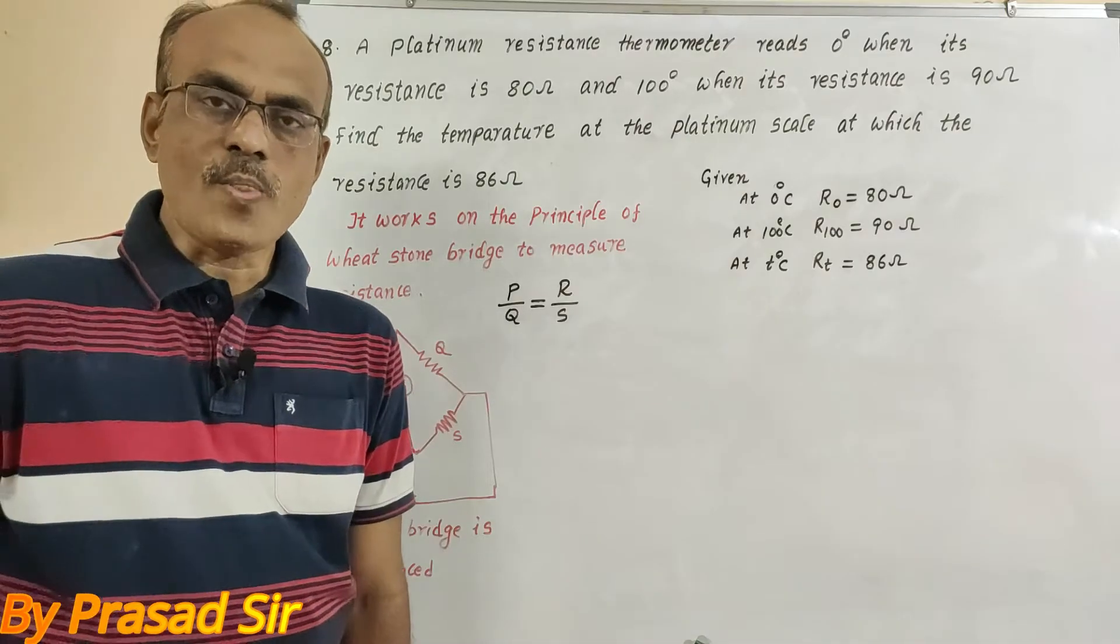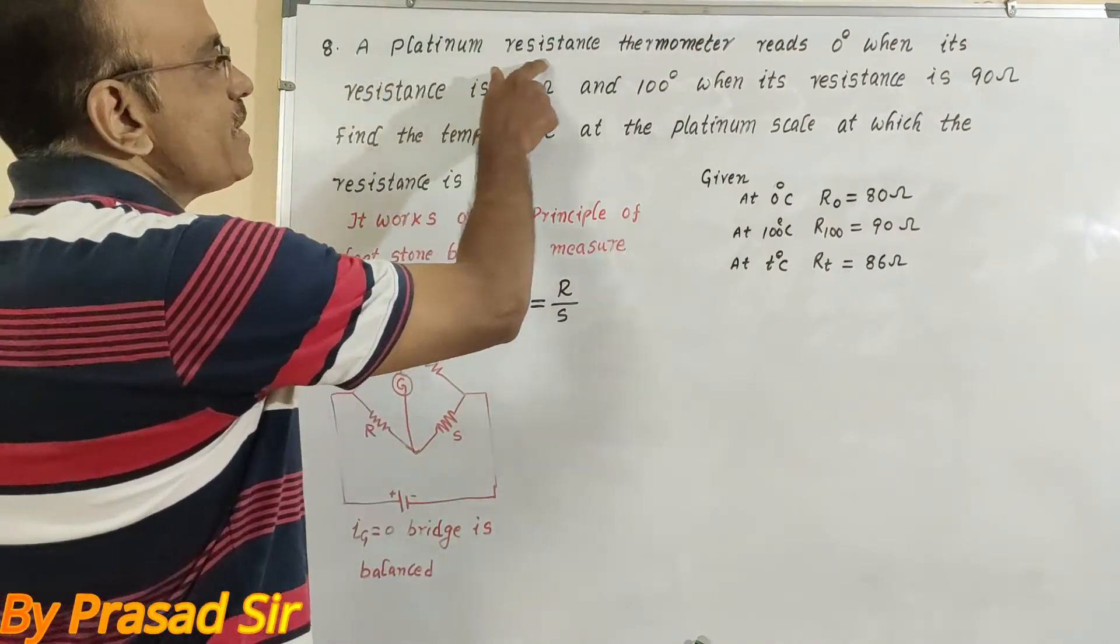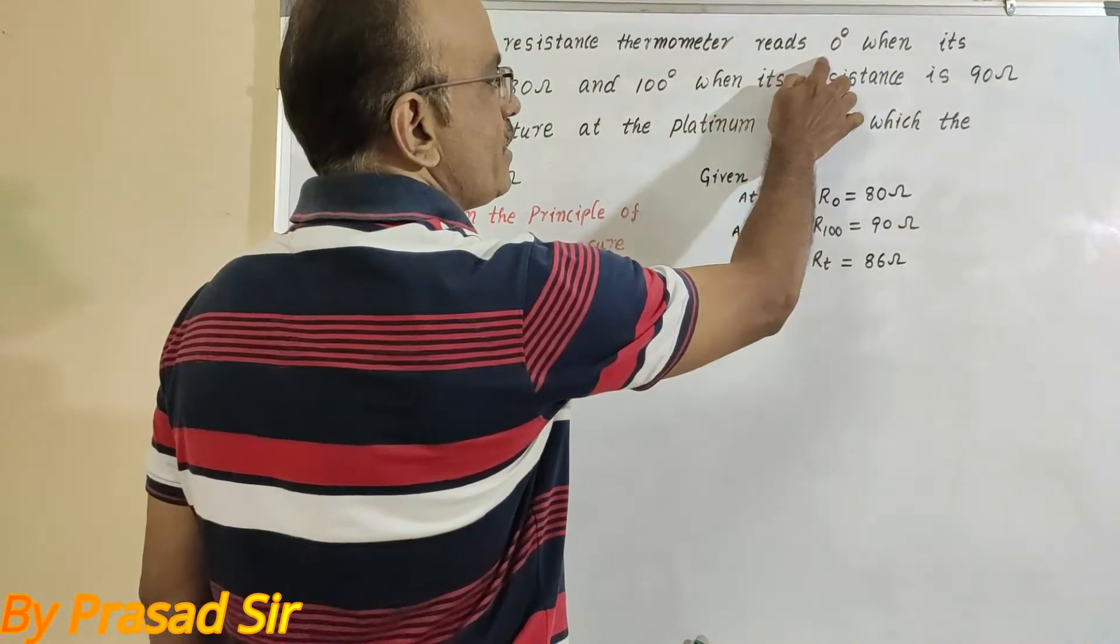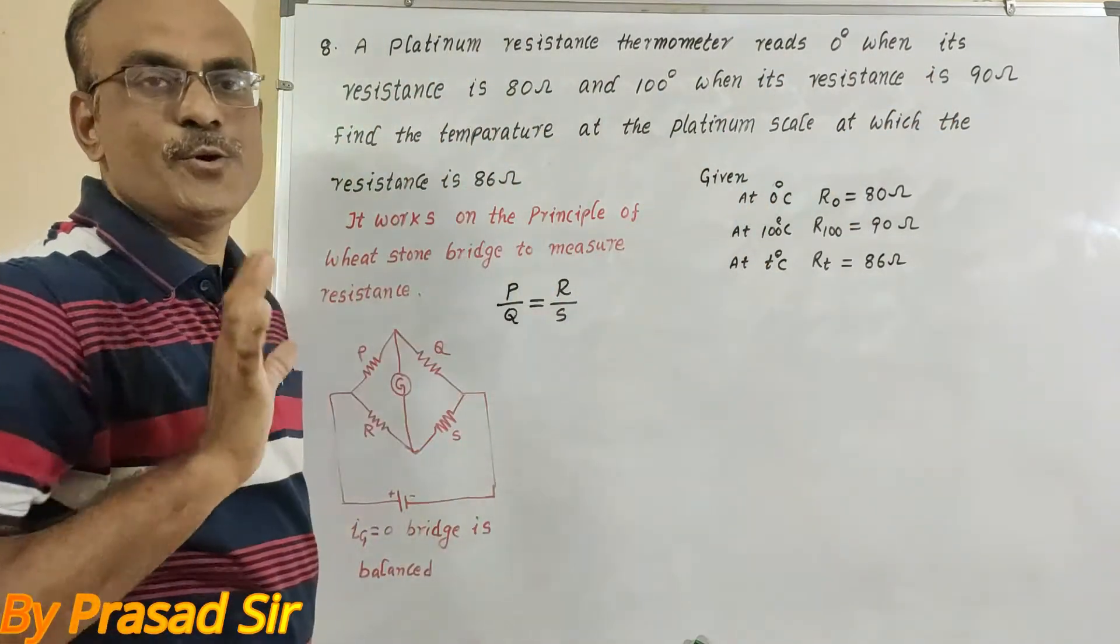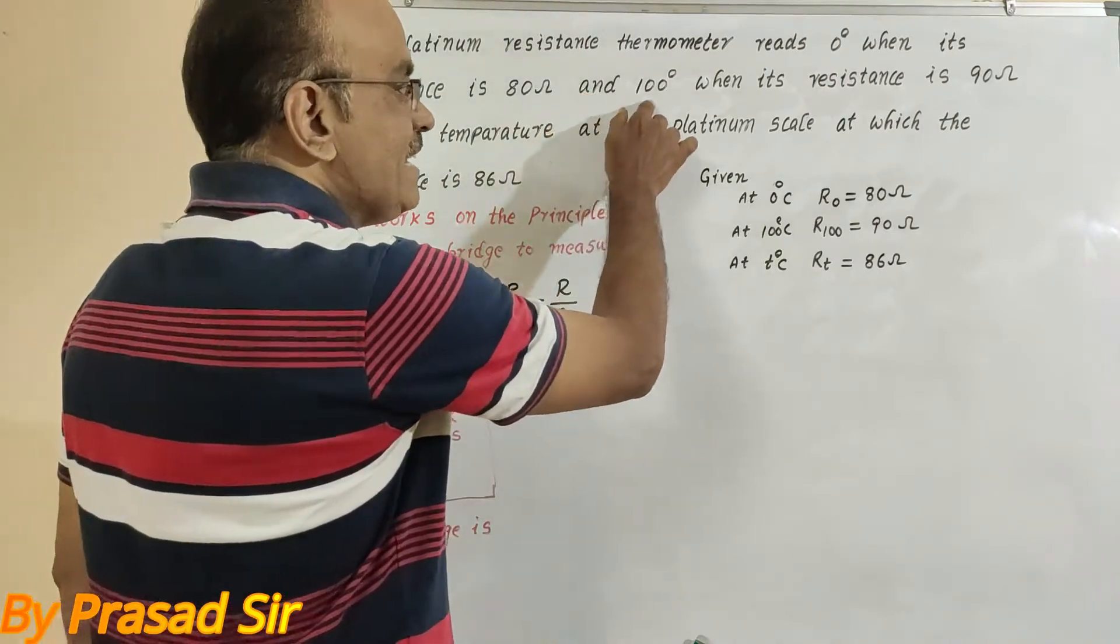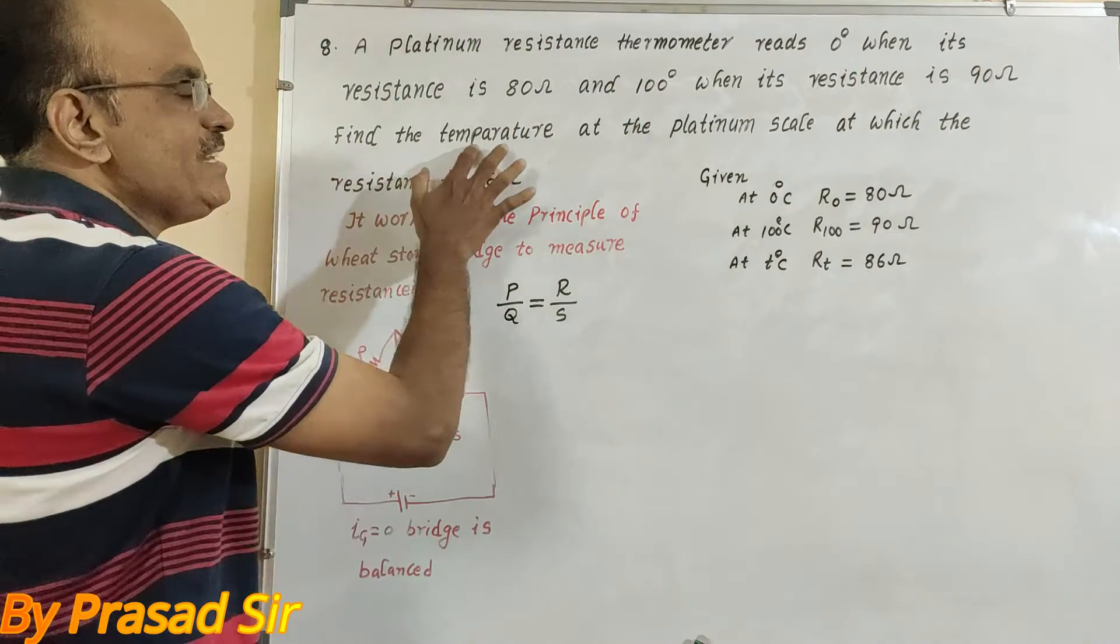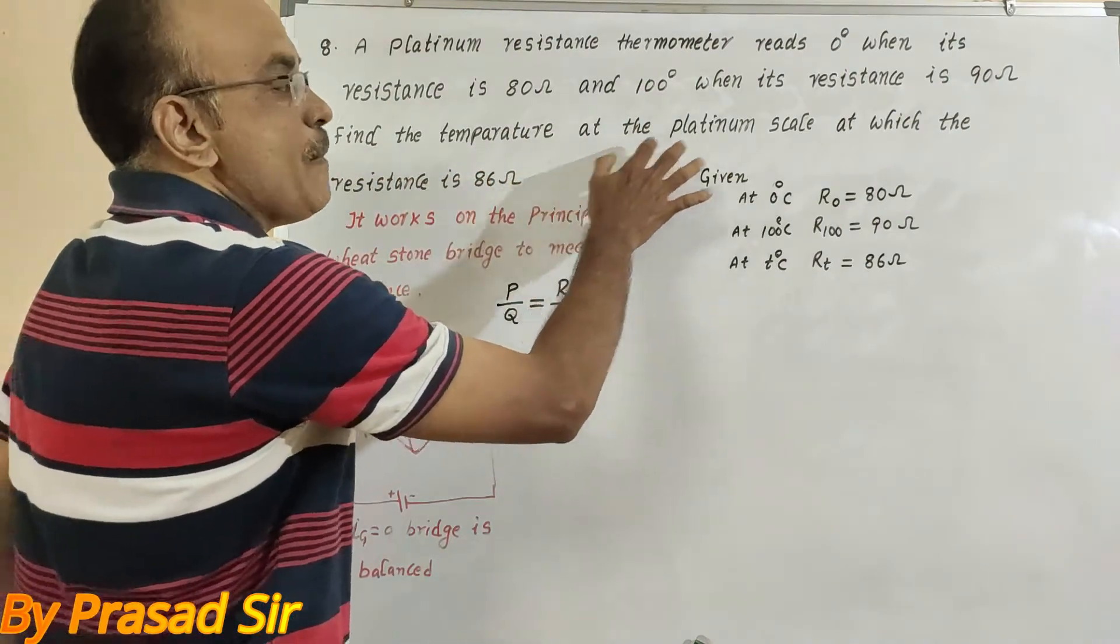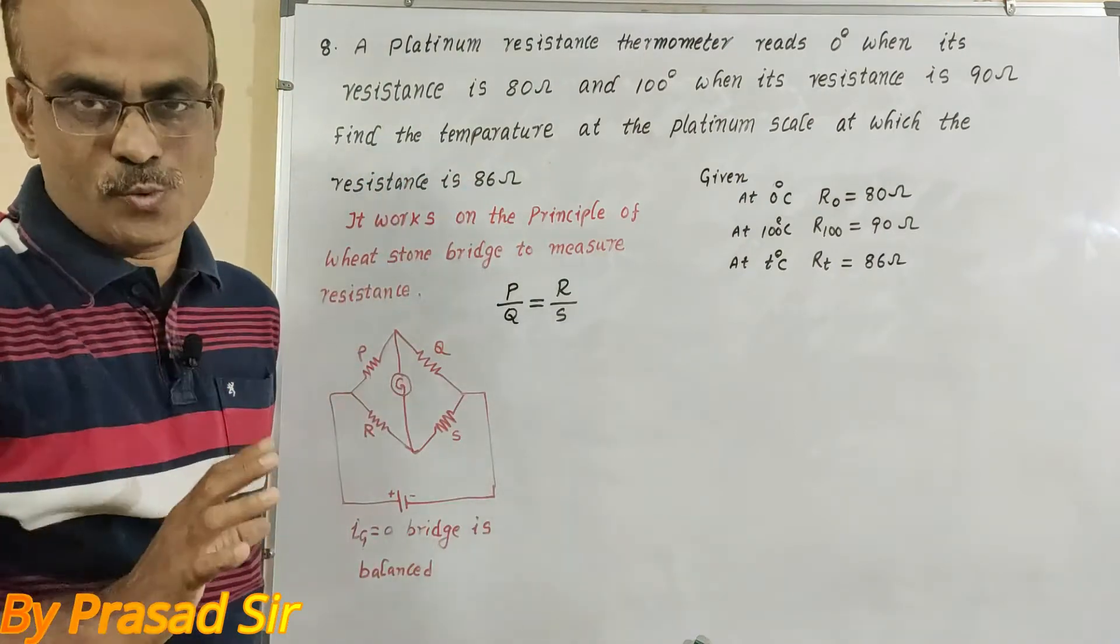Now question number 8: A platinum resistance thermometer reads 0 degrees when its resistance is 80 ohms and 100 degrees when its resistance is 90 ohms. Find the temperature on the platinum scale at which the resistance is 86 ohms.